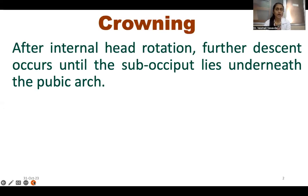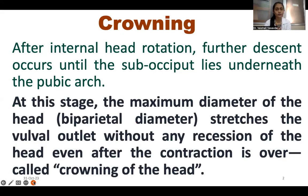So what happens in crowning? After internal head rotation, further descent occurs until the sub-occiput lies underneath the pubic arch. That means, the female pelvis remains in the pubic arch. Until the fetal head reaches the sub-occiput, the descent continues. And then, this position is called crowning. After crowning, at this stage, the maximum diameter of the head — that is, the biparietal diameter — stretches the vulval outlet without any recession of the head, even after the contraction is over.